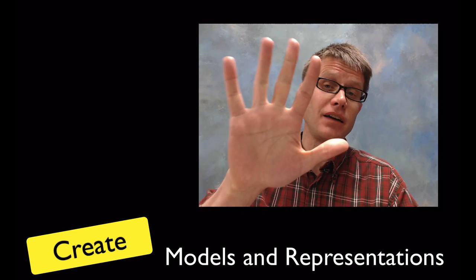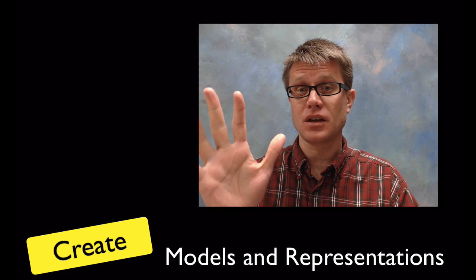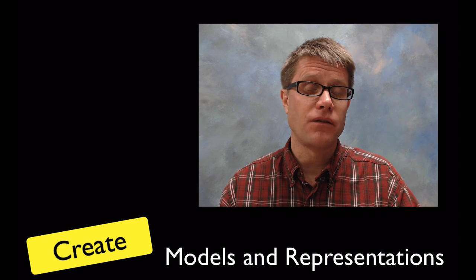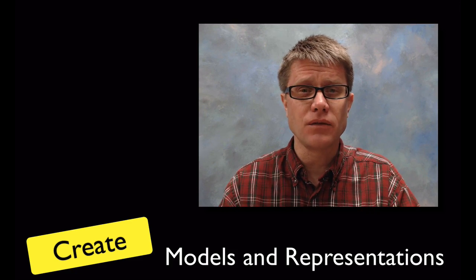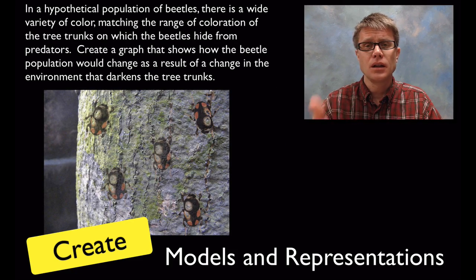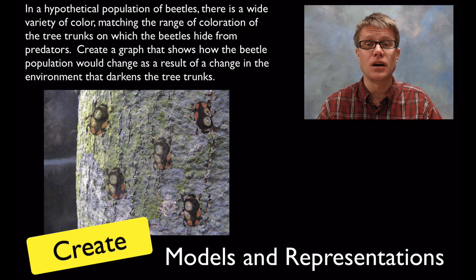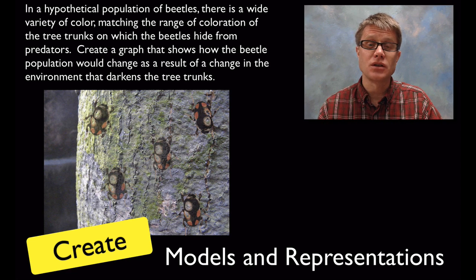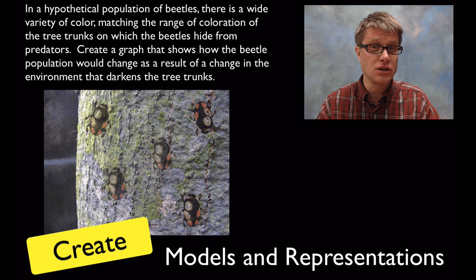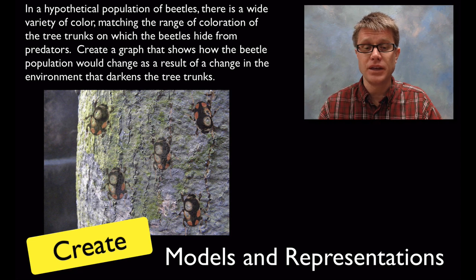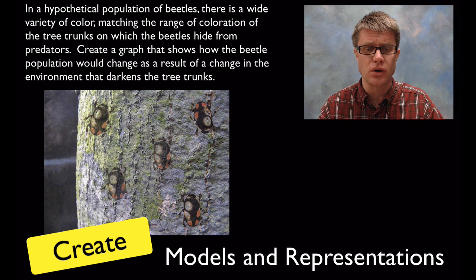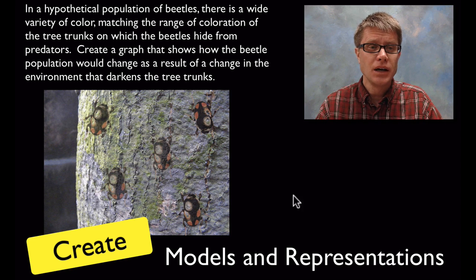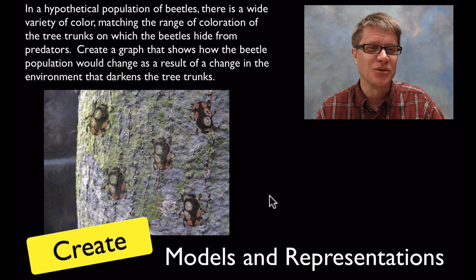But they're asking that you can do five things using models and visual representations. And so they first of all want you to be able to create models and representations. And so you can think of each of these questions, here's the first one, like a question you might experience on the AP Biology test in the spring. In other words they're asking you to apply the knowledge that you've built using a science practice. In this case you would have to build or create a model or representation. And so you could pause the video. I've got five of these. You could try to do this and then you could watch me explain it.